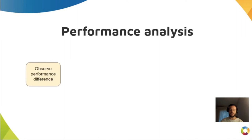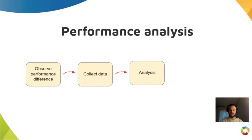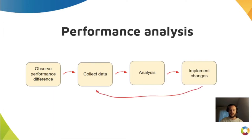For performance analysis, our optimization process goes like this. Observe where the performance differs — for example, window animation is slow, tab dragging is lagging, and so on. In other words, define the critical user journey. Then collect performance data, getting an execution trace basically. Do an analysis and build a theory of what's going on. Then you implement the optimization.